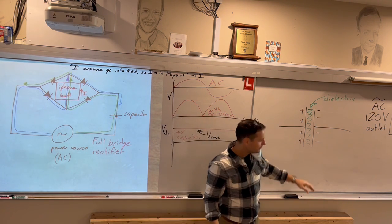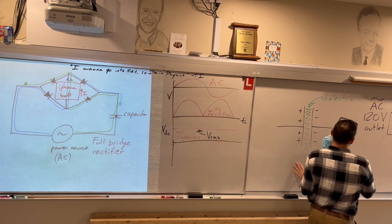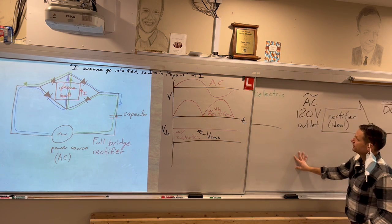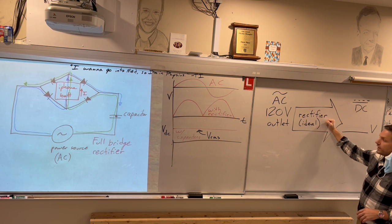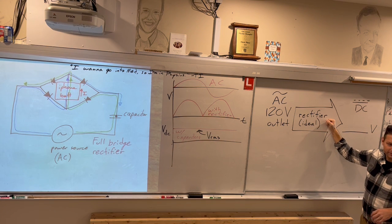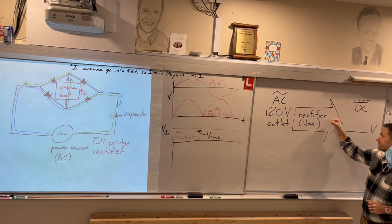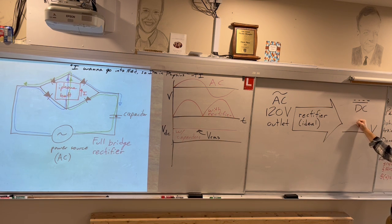The question now is, if we have a 120 volt AC outlet and we plug it into a perfect rectifier, which does not exist in the real world but maybe you guys can make one, then what voltage of DC power will that produce?